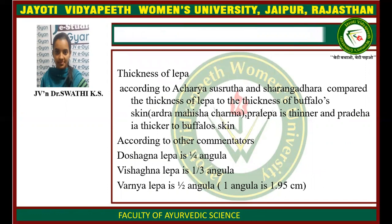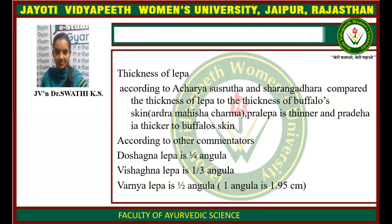Coming to the thickness of the Lepa: according to Acharya Sushruta and Sharangadhara, they compare the thickness of the Lepa to the thickness of the papillose skin, that is Ardramahisha Charma. The Lepa thickness should be like that of the Ardramahisha Charma. Pralepa is thinner and Pradeha is thicker than the papillose skin. According to other commentators, Dushatna Lepa should be like 1/4th Angula, Dishatna Lepa should be 1/3 Angula, and Varnia Lepa should be like half Angula. Here 1 Angula is about 1.95 cm.